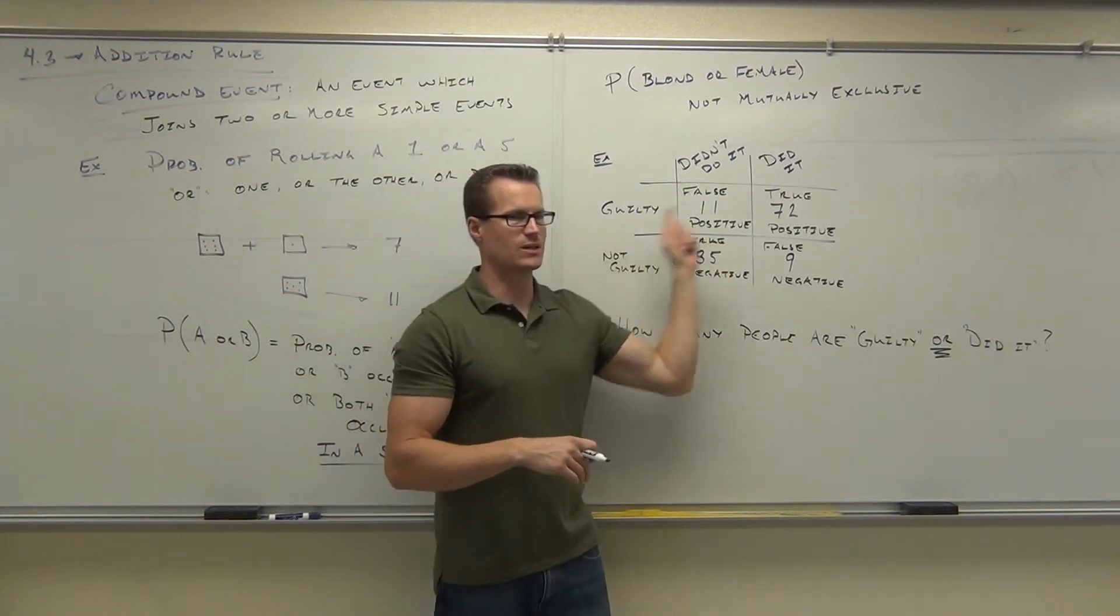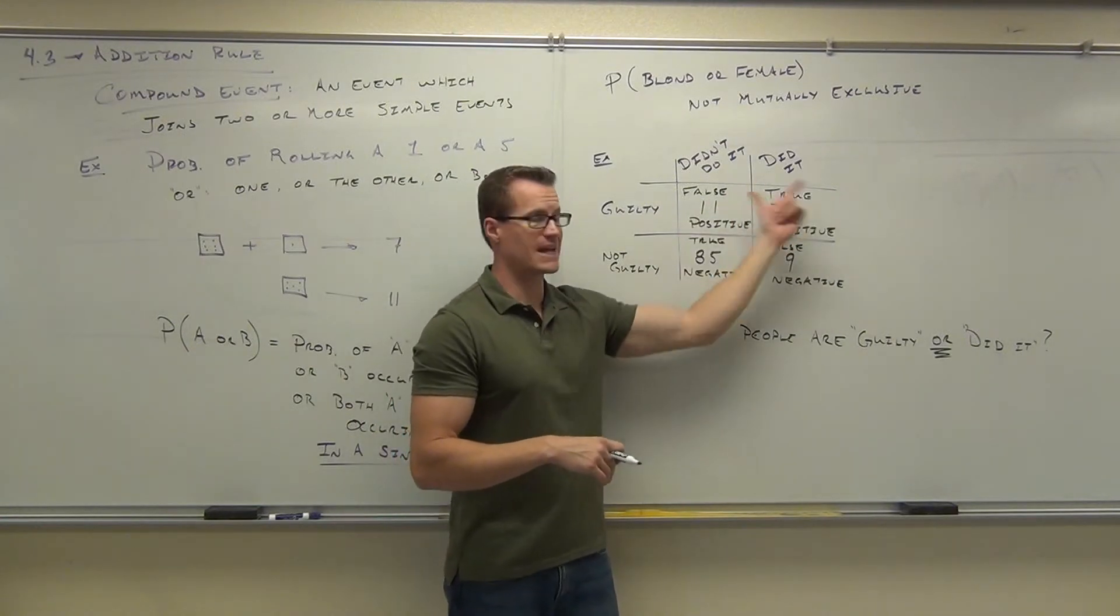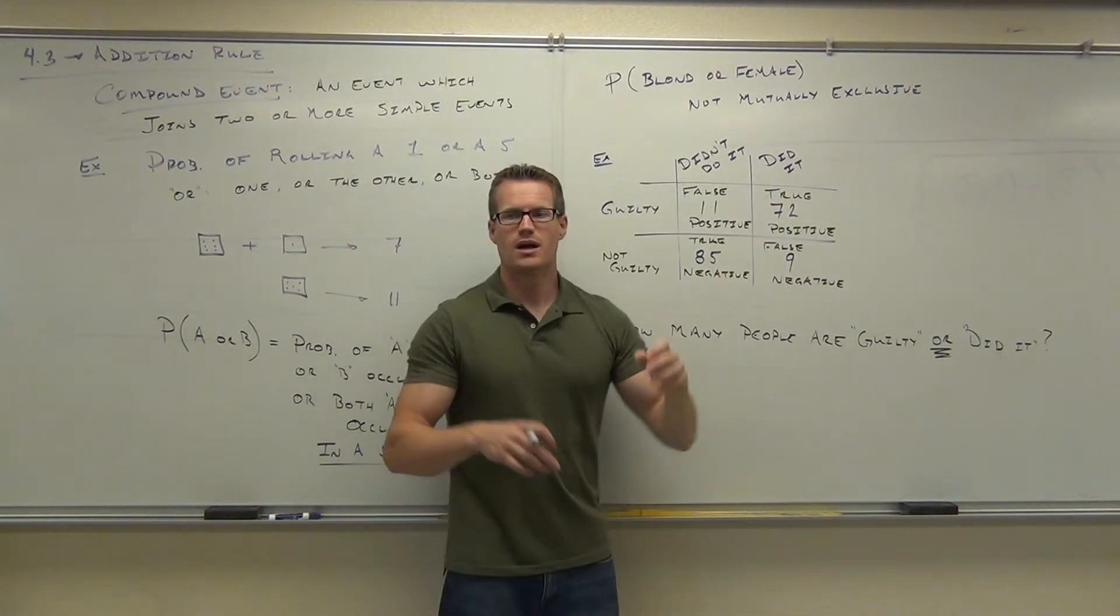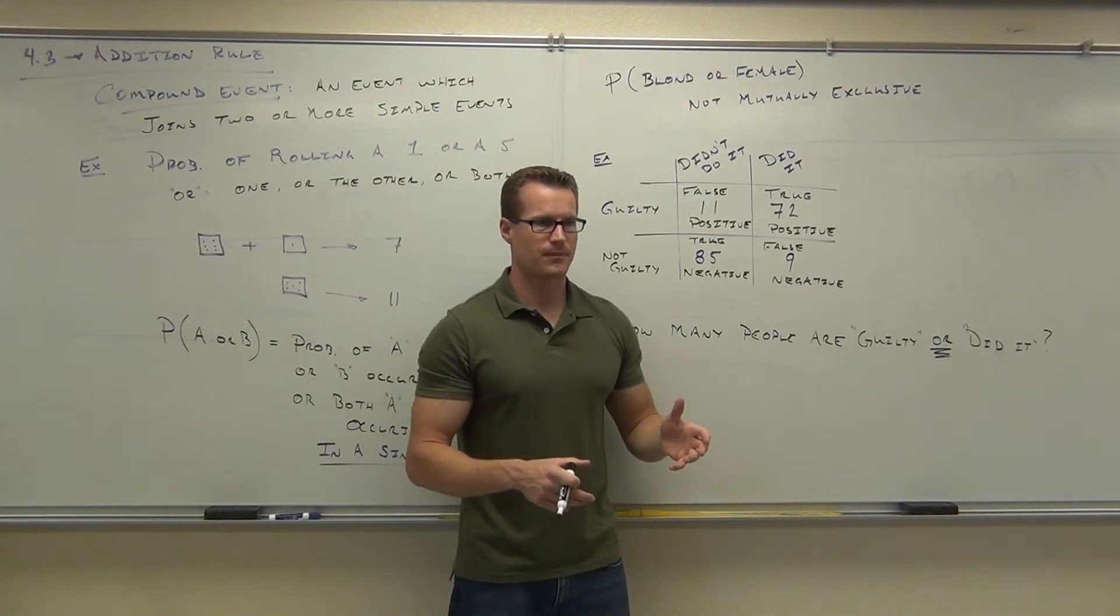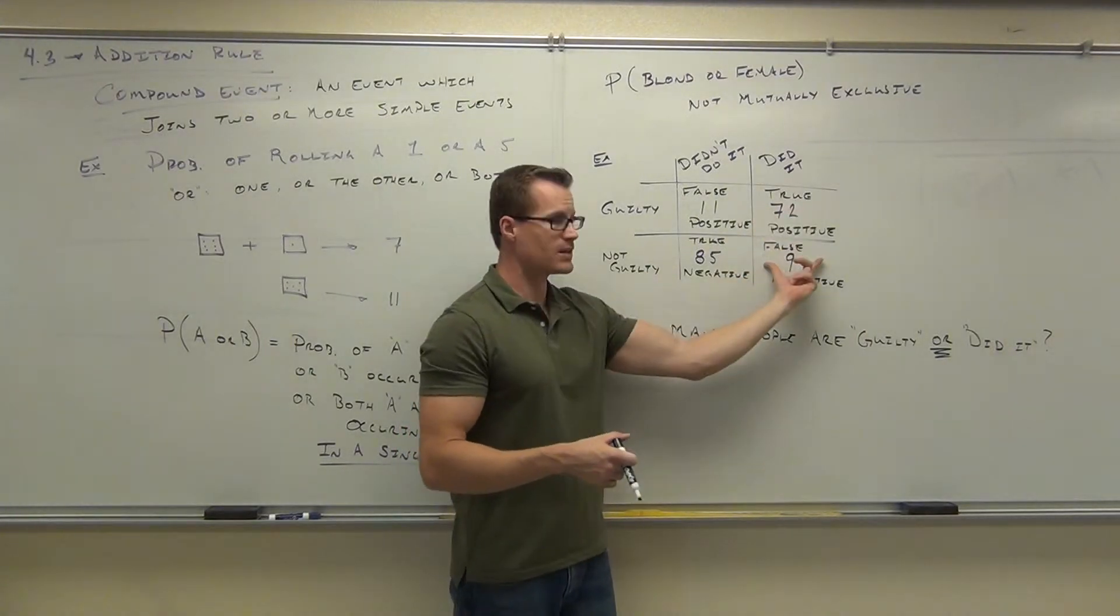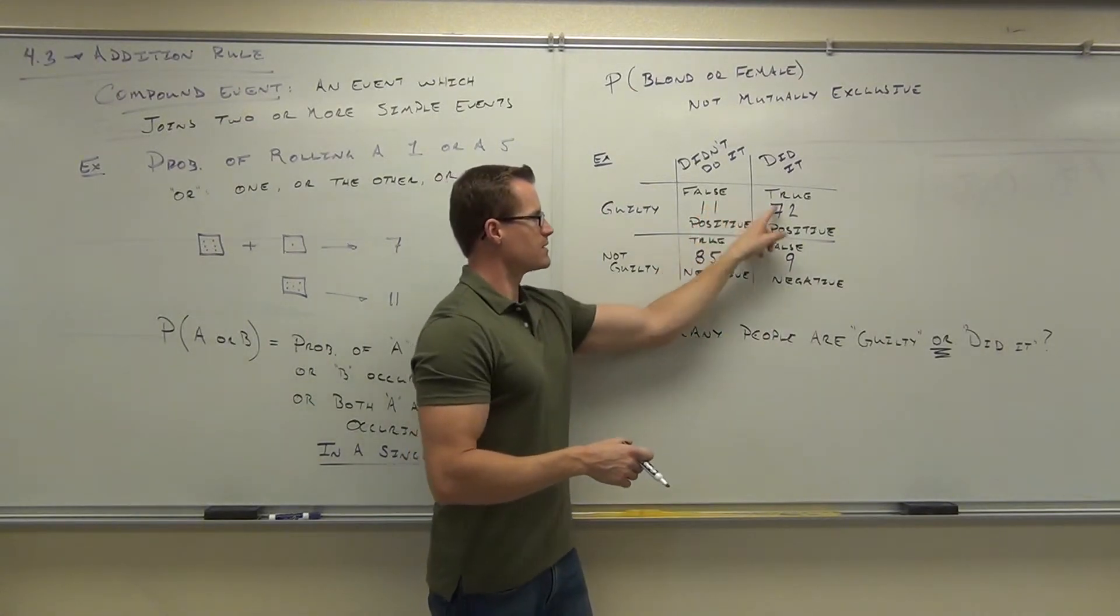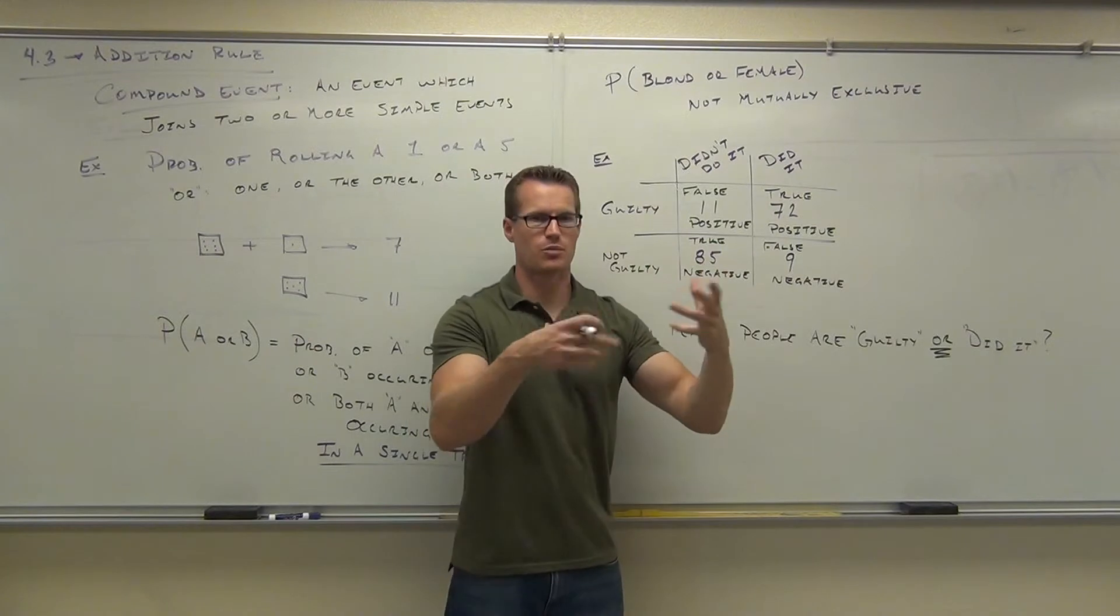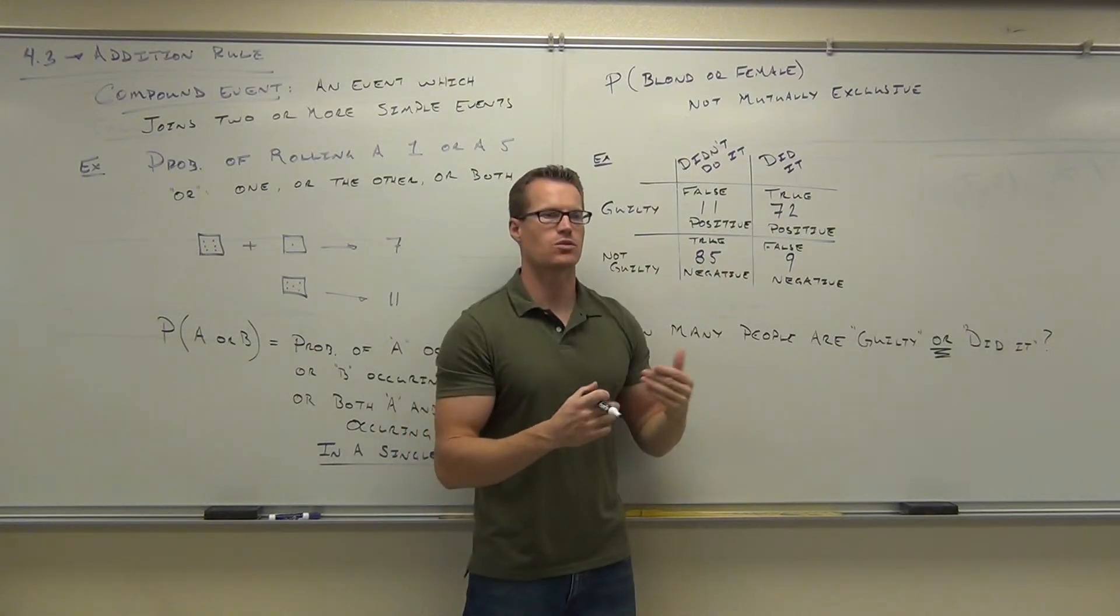So let's answer these questions one more time. How many people were found guilty? 83. Yeah, these were guilty, and these were found guilty. That's 83 people. How many people did it? 81. Where did you get 81? Great. These people did it, and these people did it. My question is, should I add this and this, and then this and this, to get the total people of guilty, or did it?